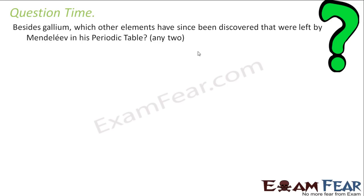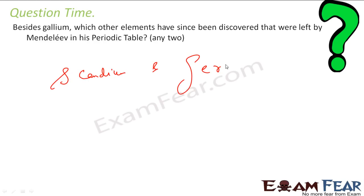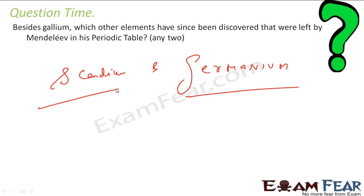Besides gallium, which other elements had been predicted and left space for by Mendeleev in the periodic table? These were scandium and germanium. These were the two elements for which space was left in the Mendeleev periodic table, and they were found after the periodic table was created.